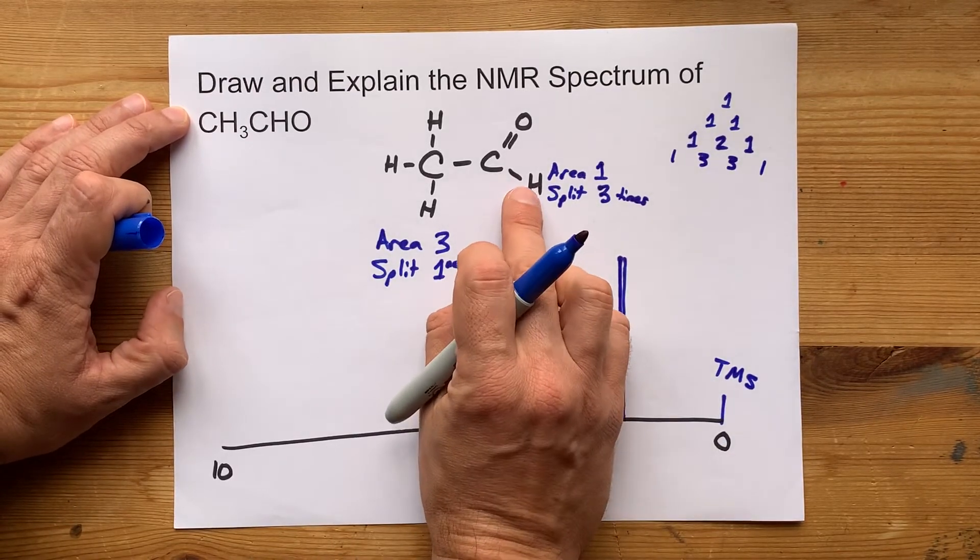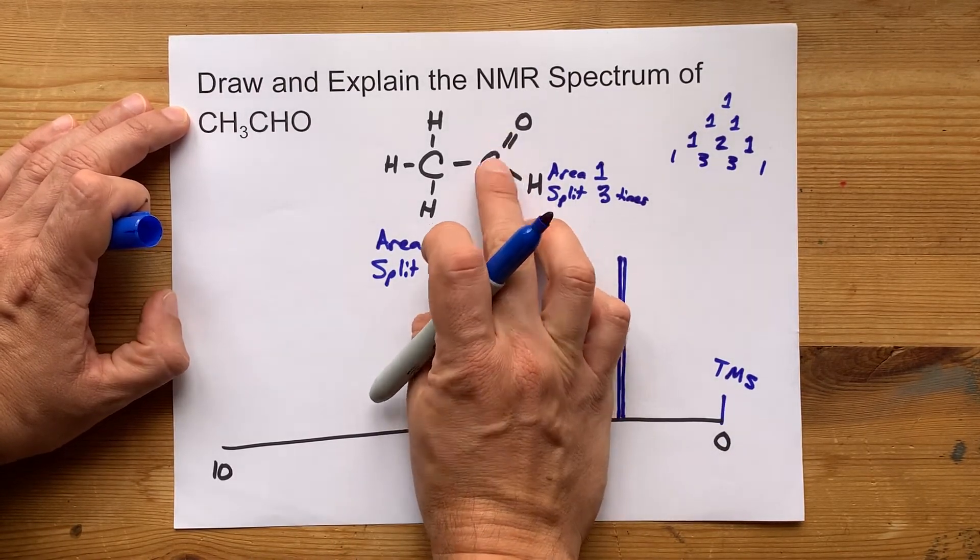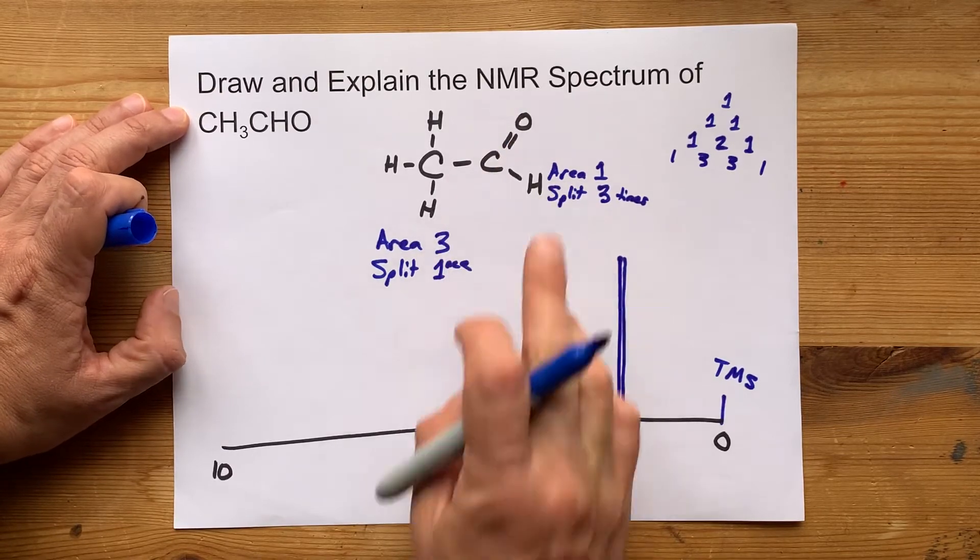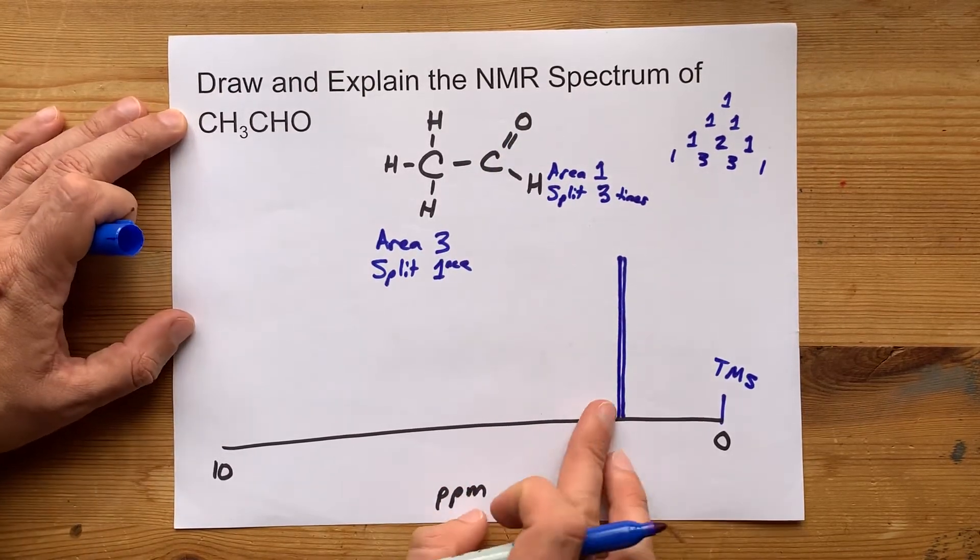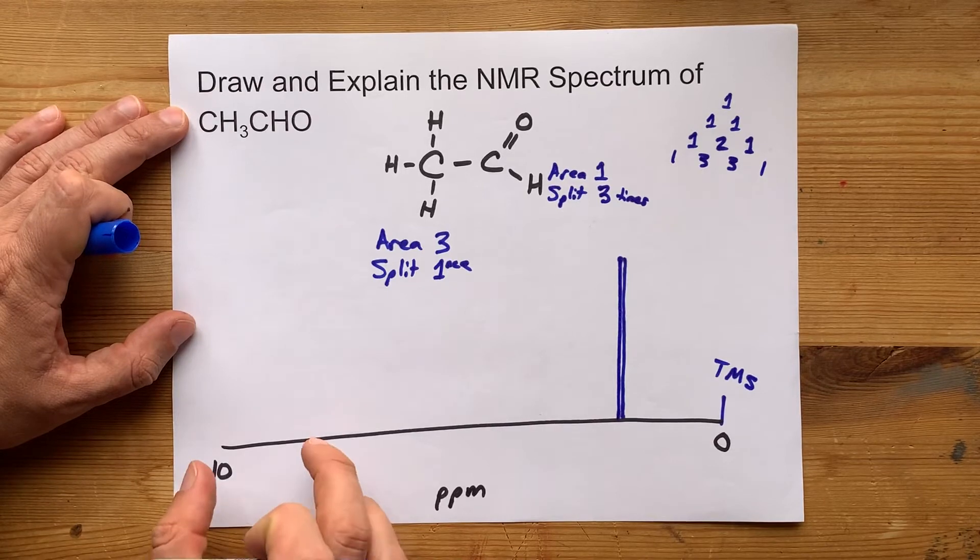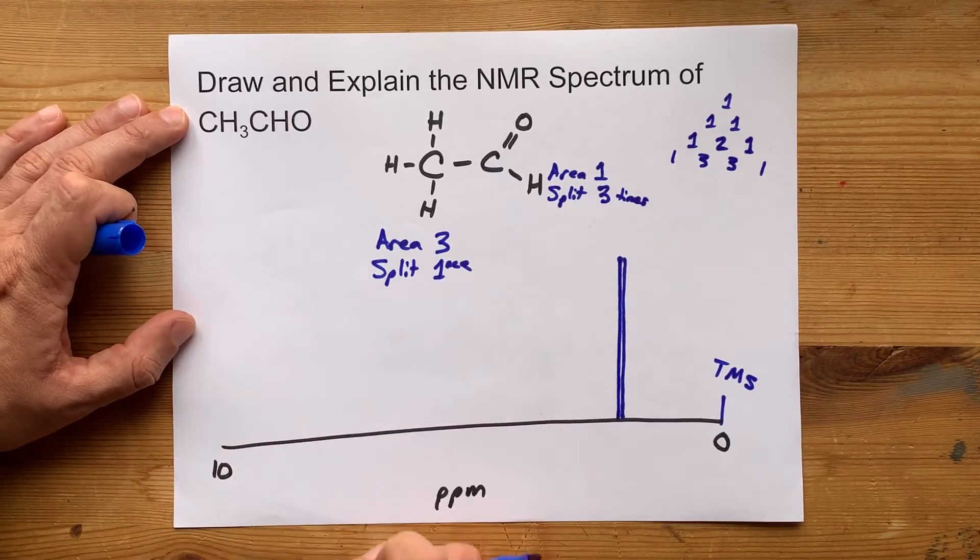Lastly, because this hydrogen is on a carbon that is directly bonded, double bonded, to an electronegative atom, it's going to be very high on the ppm scale, somewhere between 8 and 10, I think, is where the aldehydes lie.